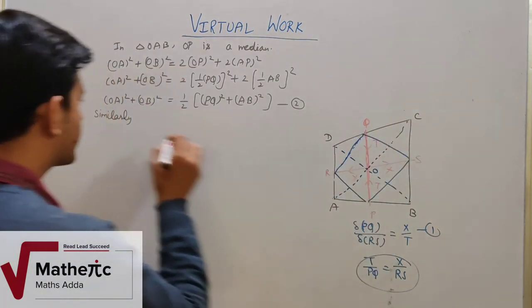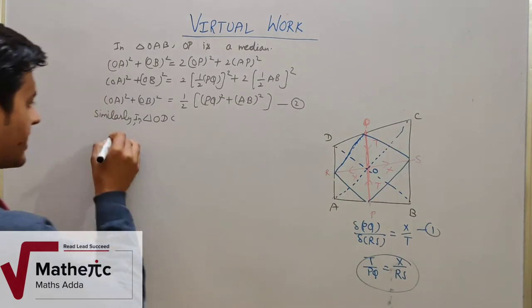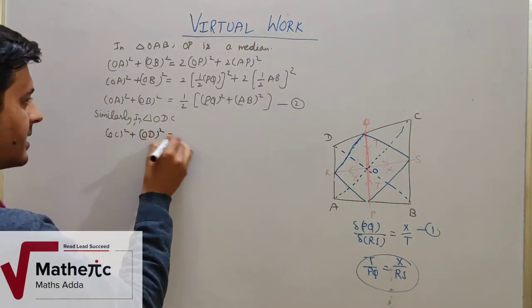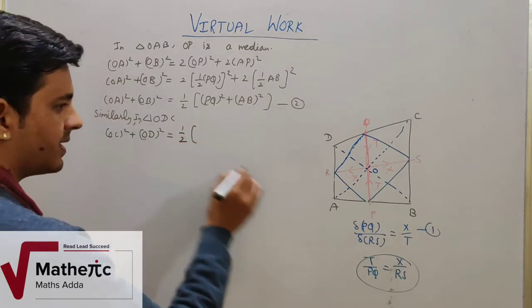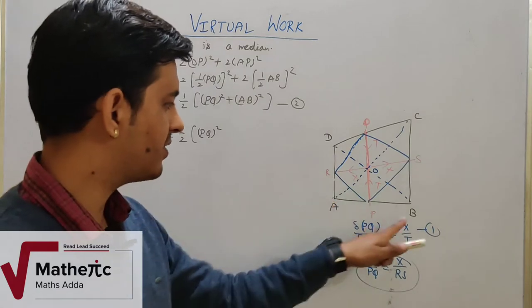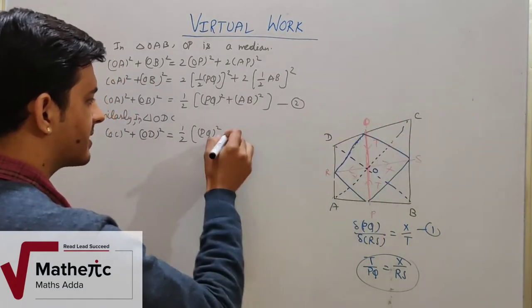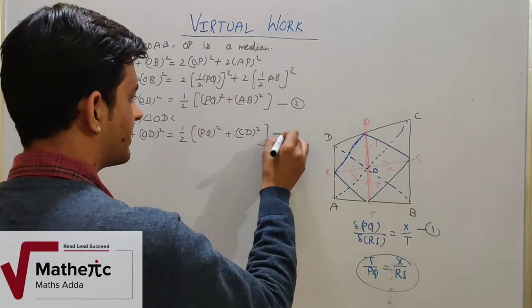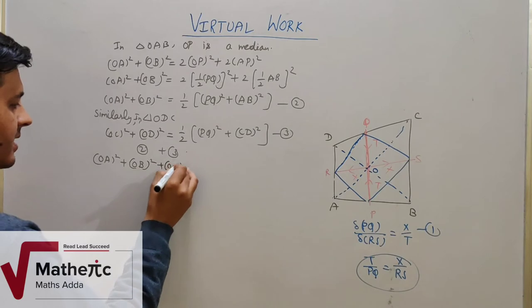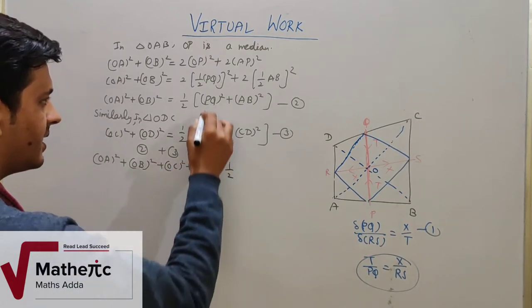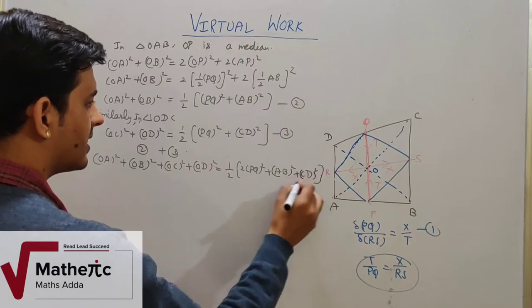Similarly, for the opposite triangle ODC, applying the same condition gives OC² + OD² = (1/2)PQ² + (1/2)CD². This is equation number 3. Adding equations 2 and 3: OA² + OB² + OC² + OD² = (1/2)(2·PQ²) + (1/2)(AB² + CD²), which simplifies to (1/2)(2PQ² + AB² + CD²). This is equation number 4.